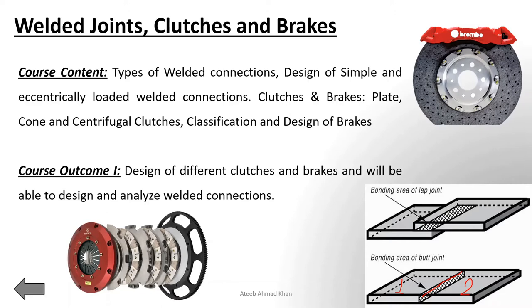Another type of welded joint is the fillet or lap joint. As the name suggests, a part of one plate is kept over a part of another plate. If welding is done along one edge, it is a single transverse fillet or single lap joint. If welding is done on both edges, this type of welded connection is known as a double lap joint.